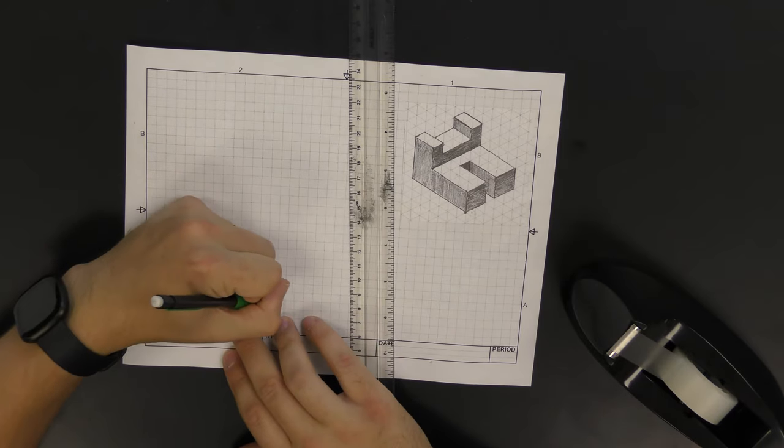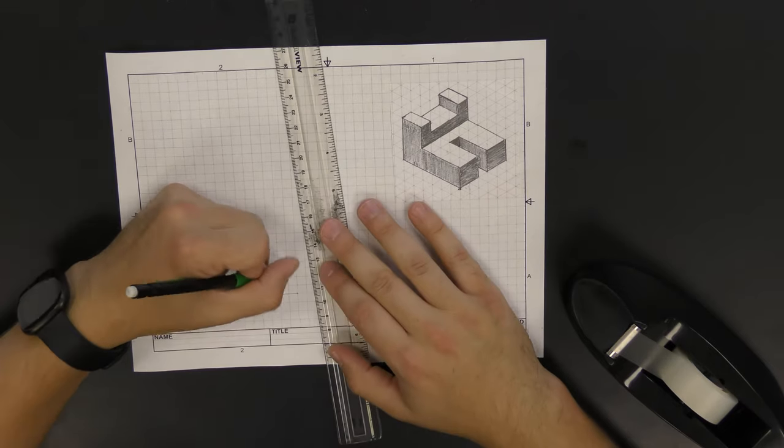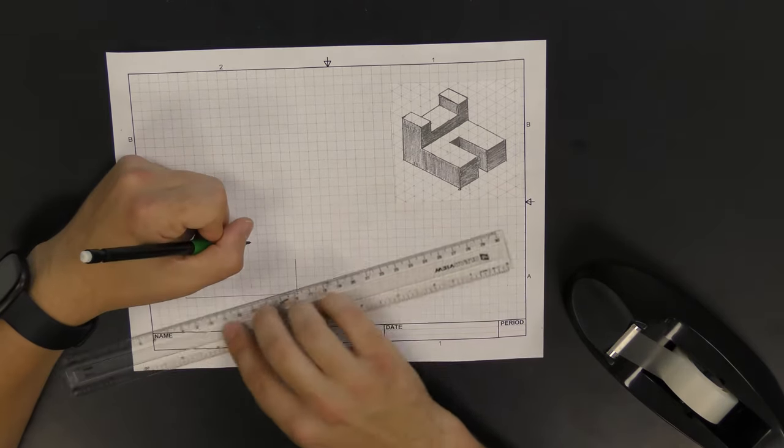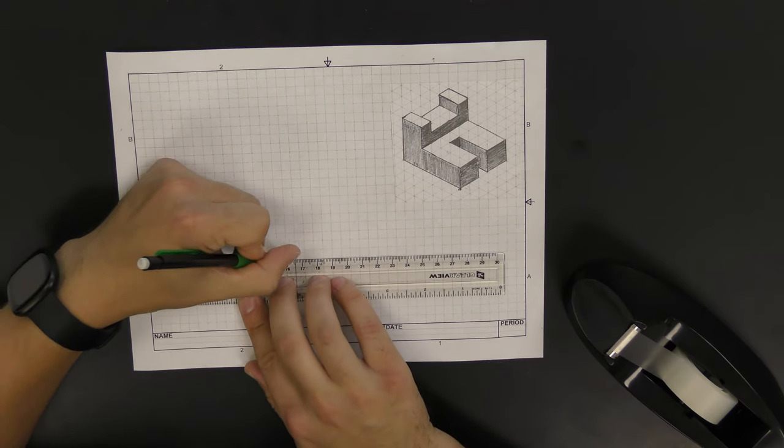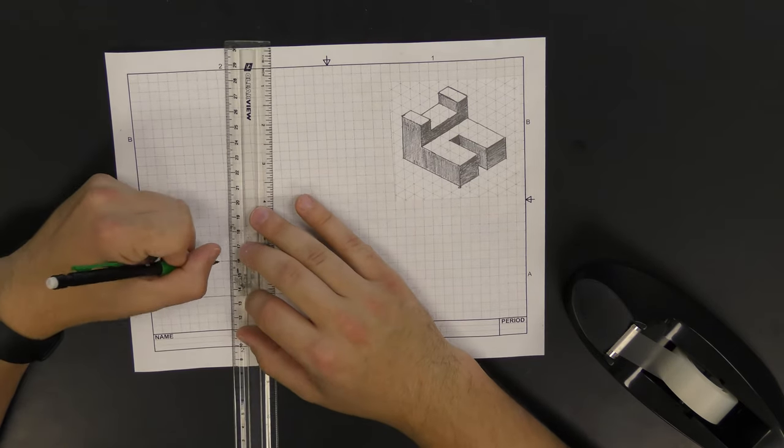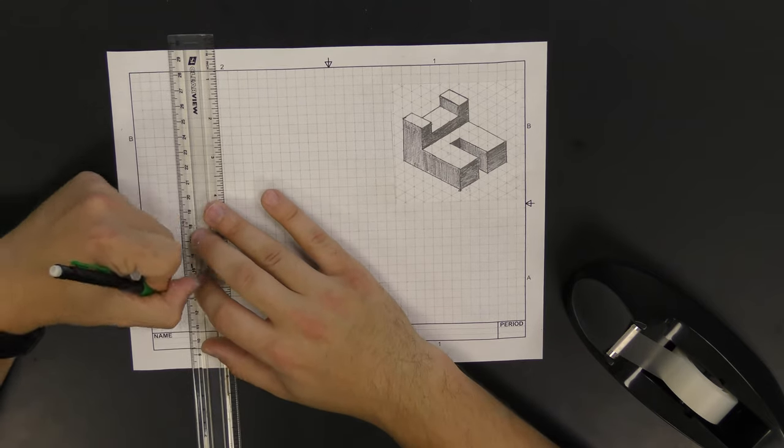Just like in the last video, we'll start by sketching the front view, and we'll do that in the bottom left corner of our paper. Make sure that you draw your front view to scale according to the dimensions that are given in your isometric sketch. In this case, we have a bottom width of six inches, and so we're using the dimensions that are given in the diagram.